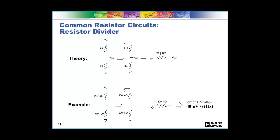So here in our example, we have two 200 kiloohm resistors. It turns into a 100 kiloohm resistor. Then we use our little rule of taking the square root of 100 to get 10, multiply that by 4, and we get 40 nanovolts per root hertz.